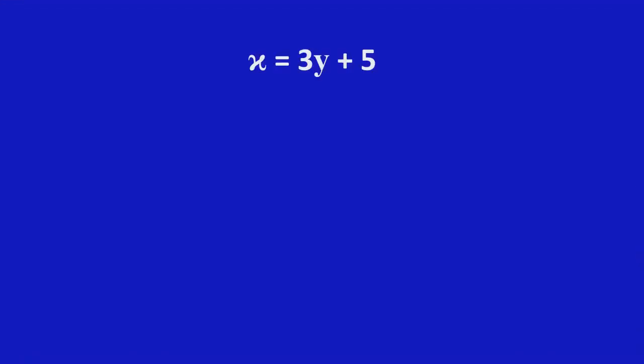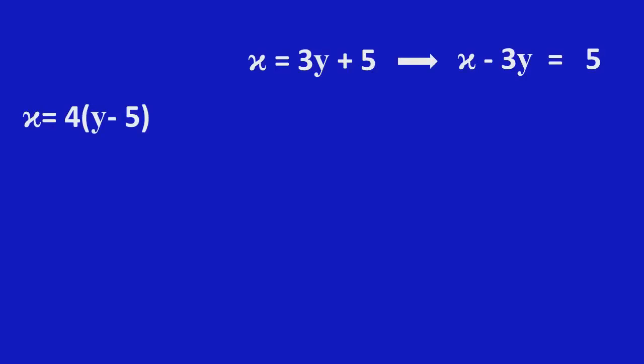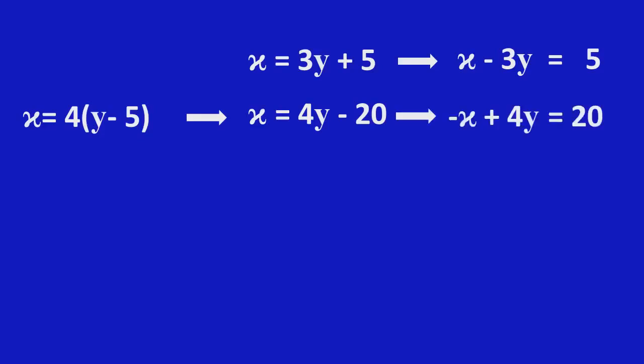Now, we are going to solve both equations. X equals 3Y plus 5 implies X minus 3Y equals 5. X equals 4 into (Y minus 5) implies X equals 4Y minus 20, which gives minus X plus 4Y equals 20. Now, adding both equations, X and minus X get cancelled.